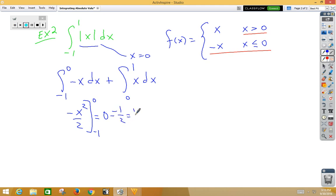So double negative is a positive, gives us 1 half. In our second one, we get x squared over 2 from 0 to 1, which would be 1 half minus 0, which is 1 half. So 1 half plus 1 half is 1 as our final answer.